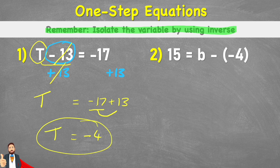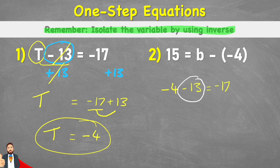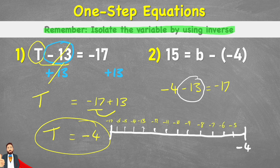What we can do just to double check our work is look back at our question and put negative 4 in the place of t. So let's rewrite it over here: negative 4 subtract 13 equals negative 17. And one way to help us is by drawing a number line. So we start with negative 4 and we're coming 13 places down the number line.